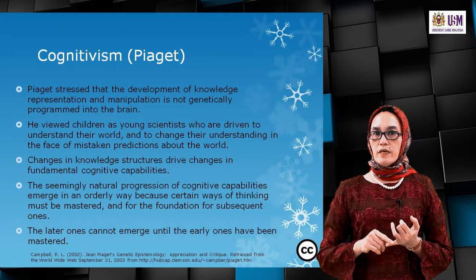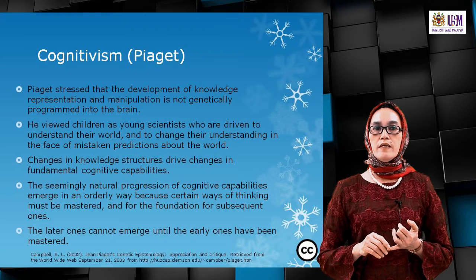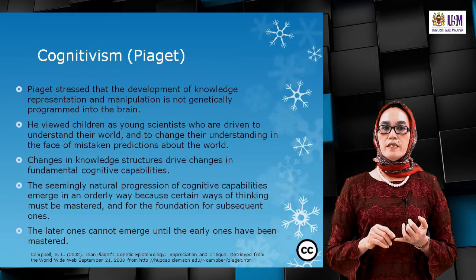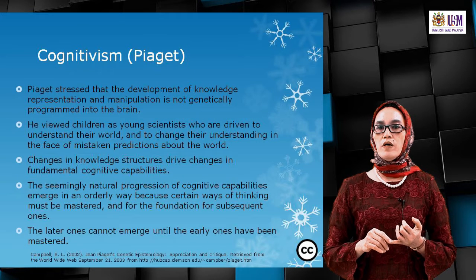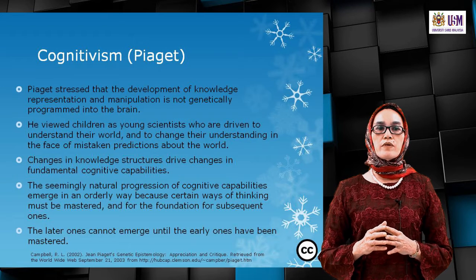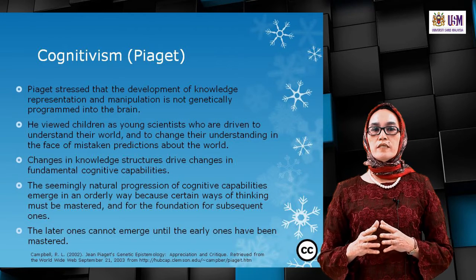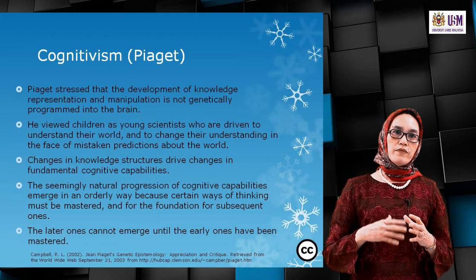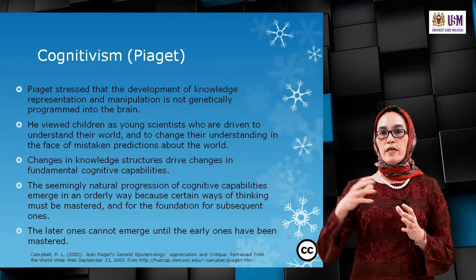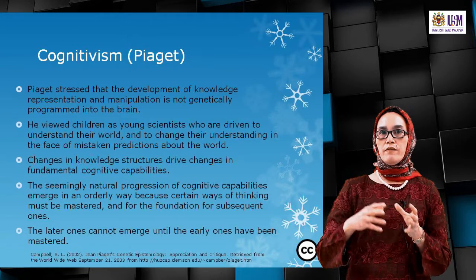In cognitivism, the stress is on cognitive capabilities. A seemingly natural progression of cognitive capabilities emerges in an orderly way because certain ways of thinking must be mastered to form the foundation for subsequent ones — the later ones cannot emerge until the earlier ones have been mastered. In cognitive theory, you must master one stage before moving on to another.